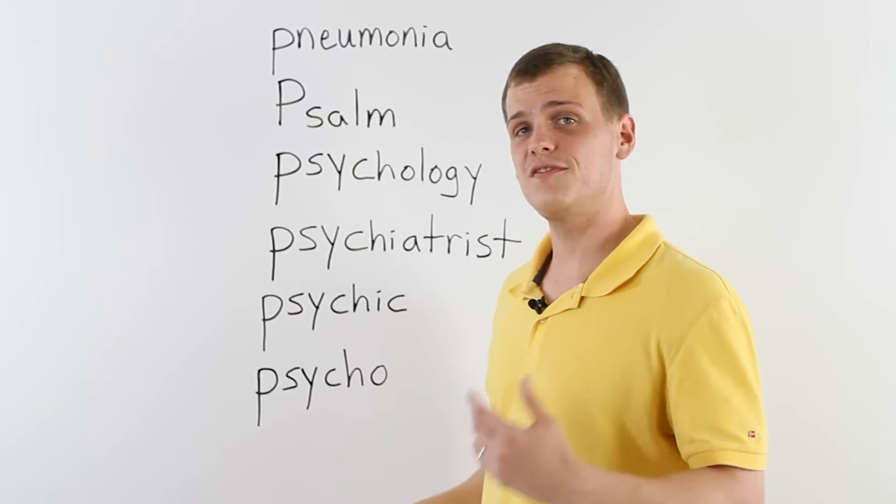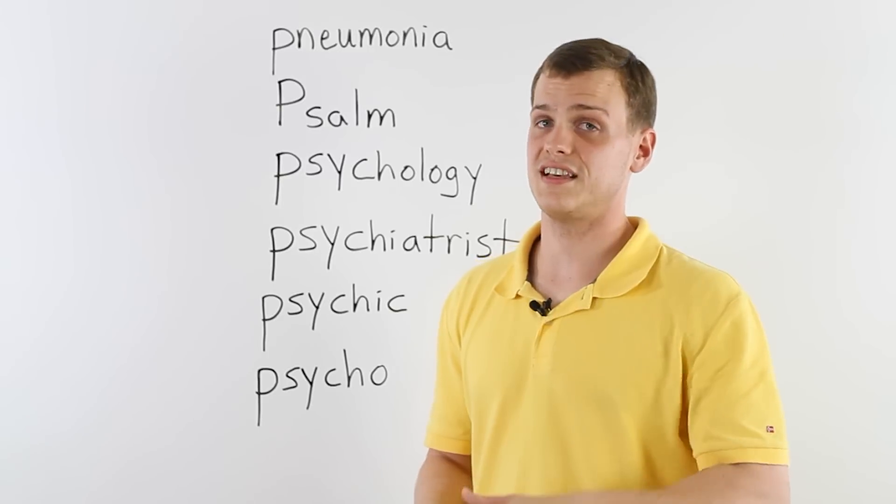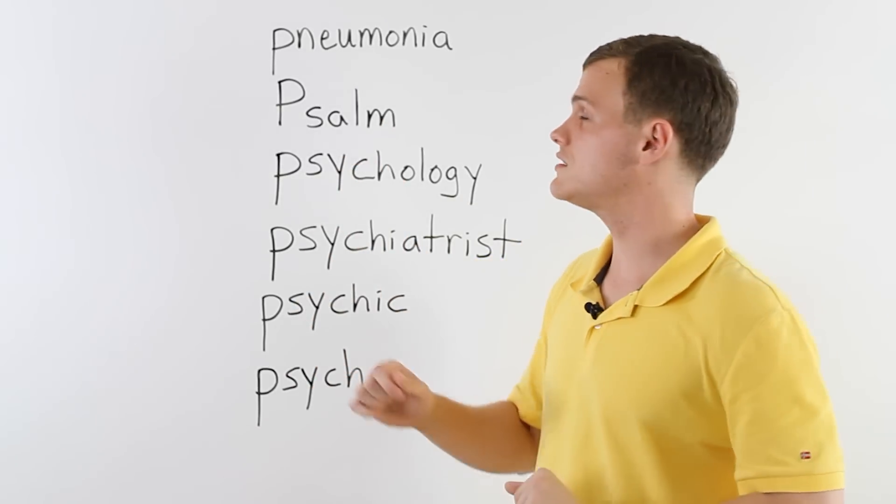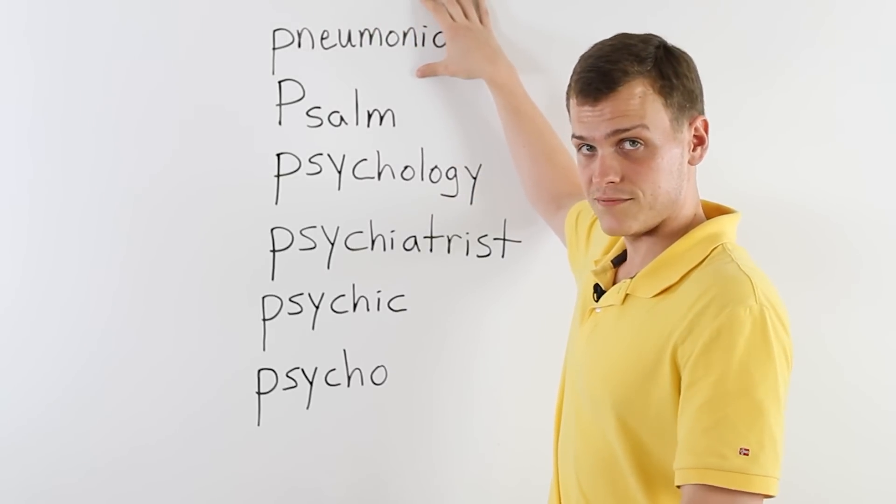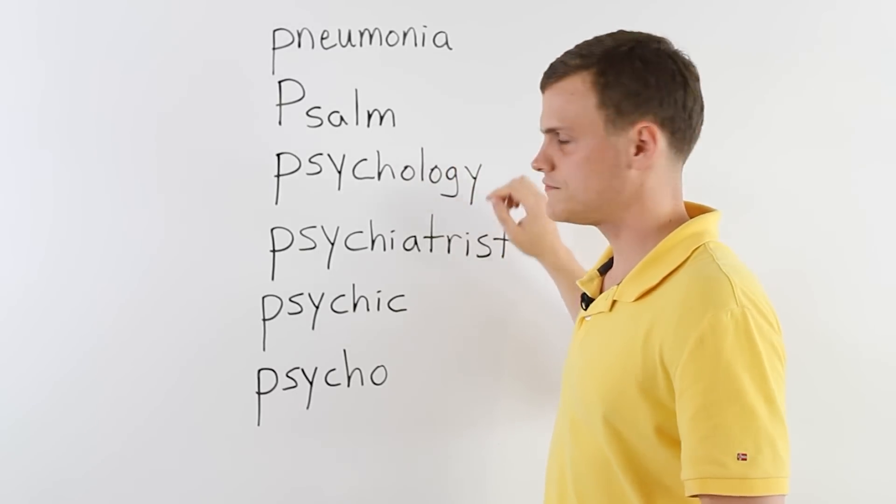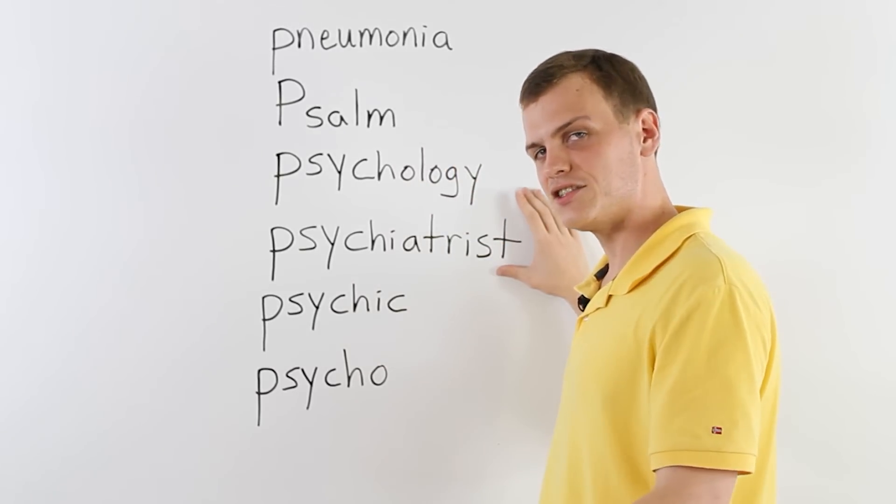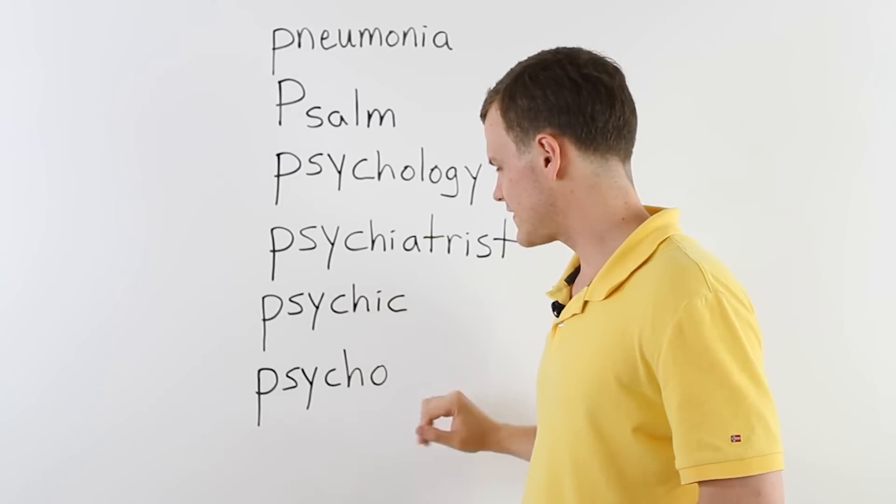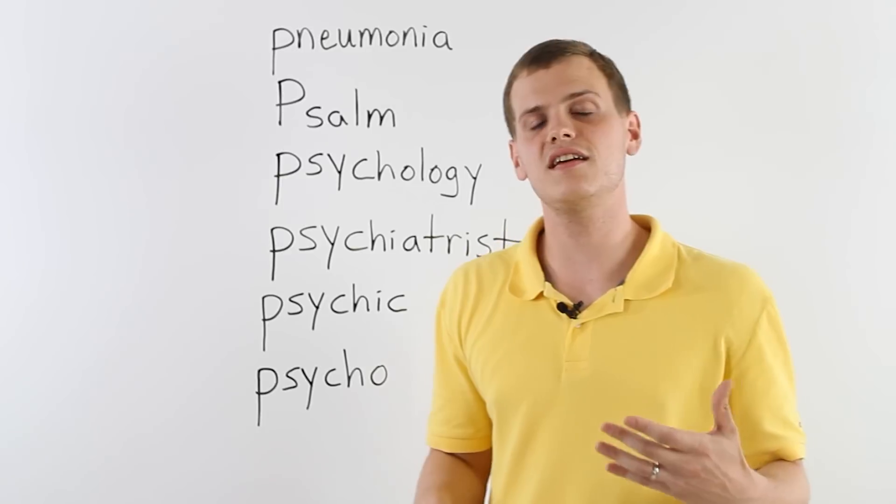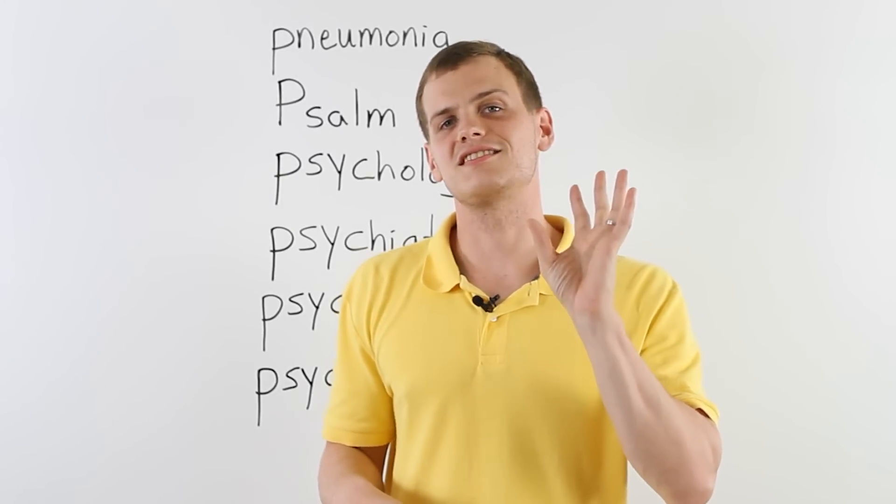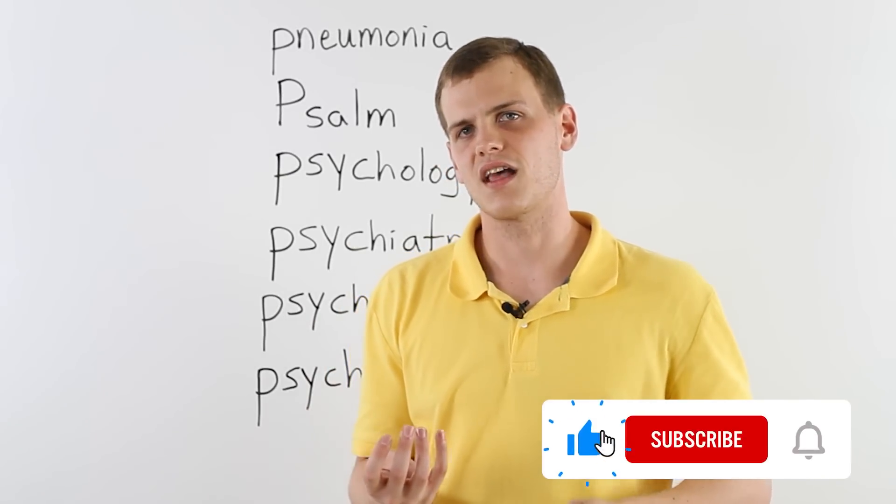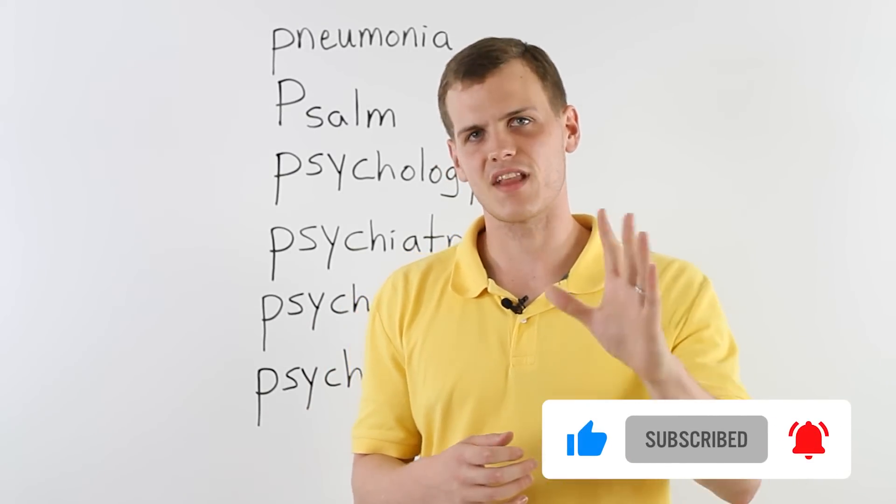So as you notice, P-S is very common. But don't say the P. So just one more time, I'm going to pronounce these for you. So listen up. We start with pneumonia, psalm, psychology, psychiatrist, psychic, and psycho. So if you ever see these words in something you're reading, just remember, there's a silent P when the word begins with P and is followed by a consonant. I hope that helps. And I hope you remember it. Have a good day.